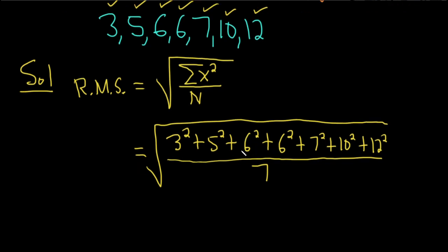Wow, lots of numbers here. Let's see what we get. So we have 3 squared, plus 5 squared, plus 6 squared, plus 6 squared, plus 7 squared, plus 10 squared, plus 12 squared.